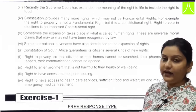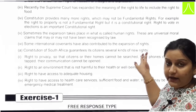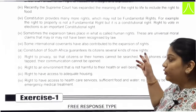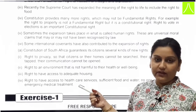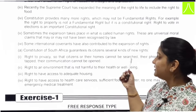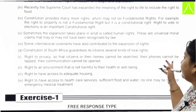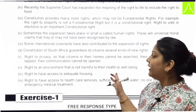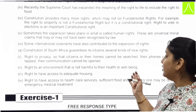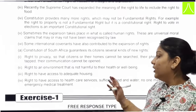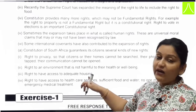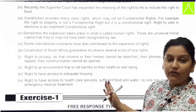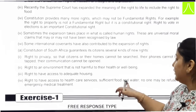For example, South Africa ki jo constitution hai, bahut nayi bani hai. It is guaranteeing its citizens several kinds of new rights. Jaise right to privacy diya gaya hai, so that citizens in their homes cannot be searched, their phones cannot be tapped, and their communication cannot be opened up. Right to an environment which is not harmful to health or well-being. And you should have access to adequate housing, healthcare services, sufficient food and water.